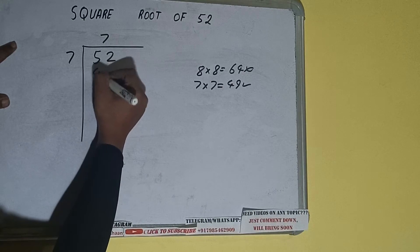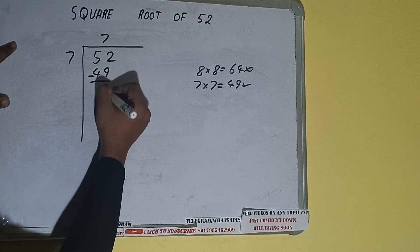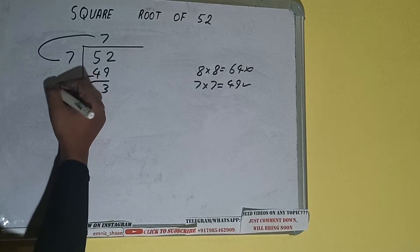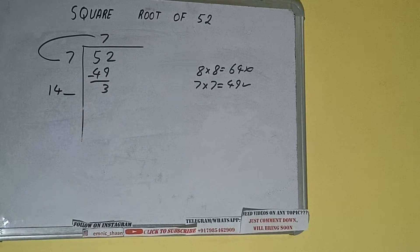So 7 here and 7 here, 49, subtract, 3 will be left. We did 7 into 7, so add both. So 7 plus 7 will be 14, write it here and keep a digit extra.